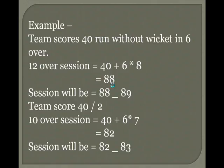Team scores 40 with 2 wickets down — 12-over session will be 40 plus 6 multiplied by 7 equals 82, offered at 82-83.